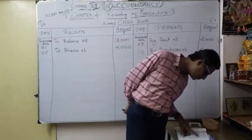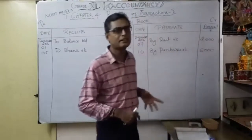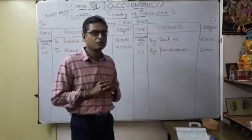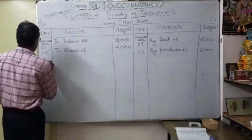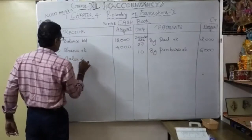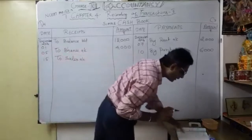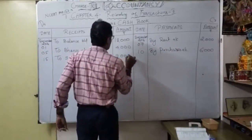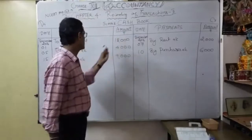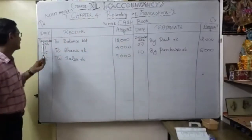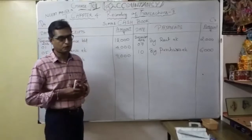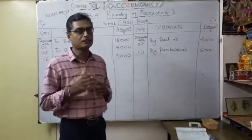Next: December 15th — sold goods for cash 9000. We received money. Entry: cash account debit to sales account 9000. So on the debit side — receipts — date is December 15th: 'To sales account' 9000. If you open the sales account, you write 'By cash account 9000' on the credit part. So cash account debit to sales account 9000.